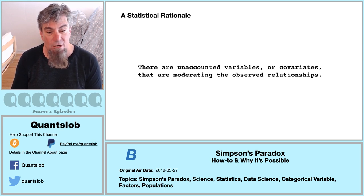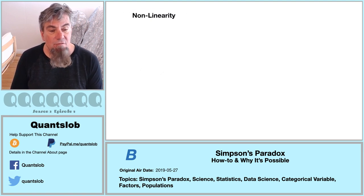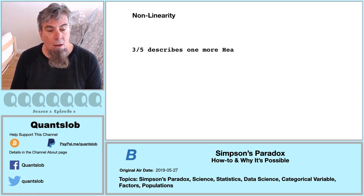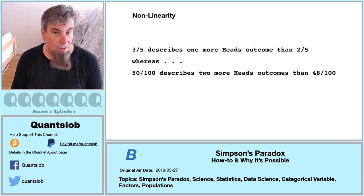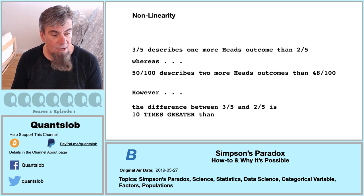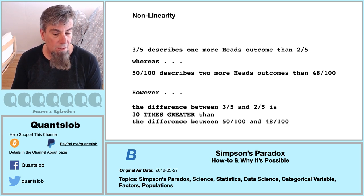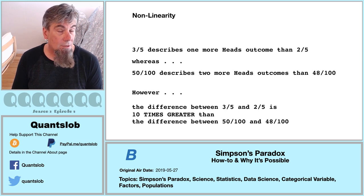What I want to offer is a much more rudimentary and frankly mundane explanation from a purely arithmetic perspective — and once we see it, it kind of spoils the mystery. Simply said, the value of a ratio is non-linear with respect to the denominator. The ratio of three-fifths describes one more head's outcome than two-fifths. The ratio of 51 one-hundredths describes two more head's outcomes than 48 one-hundredths. However, the difference between three-fifths and two-fifths is ten times greater than the difference between 51 one-hundredths and 48 one-hundredths.